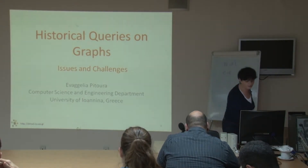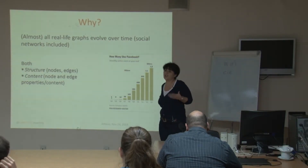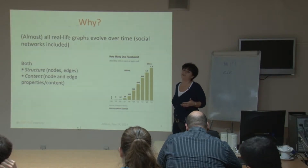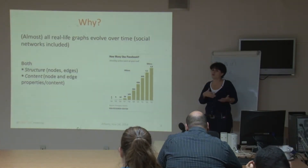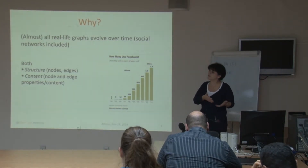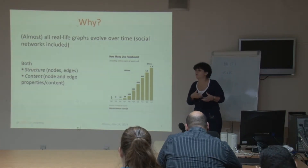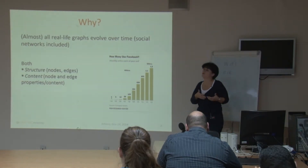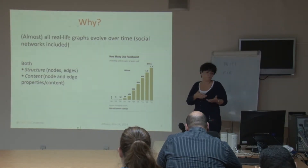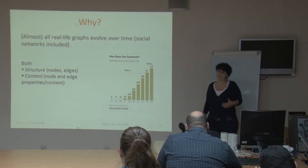So why historical queries? What's the motivation? Almost all real-world graphs change over time. They are not static objects, and this refers to both their structure — new connections are created, new nodes added, connections deleted, nodes deleted — so the structure of the underlying network changes all the time. This also applies to the content of the graph: both the properties and the content associated with nodes and edges change over time.